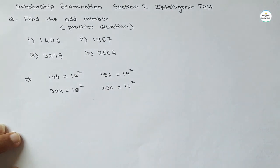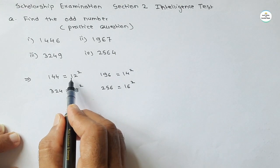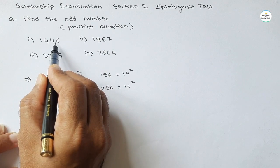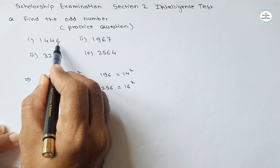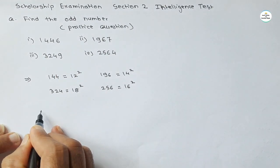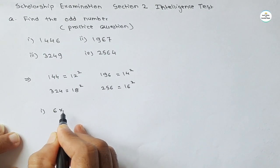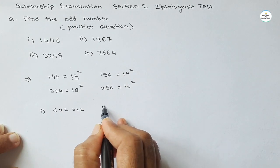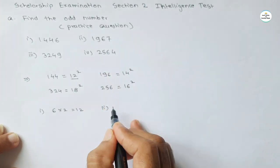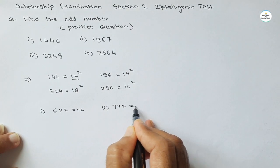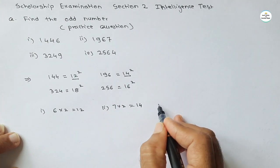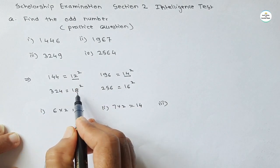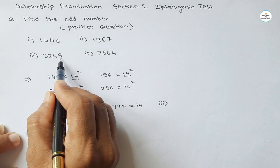So if we look at the first number 144: the last digit is 6, and if we multiply 6 by 2 we get 12, which is the square root. For the second number, the last digit is 7, and 7 multiplied by 2 gives 14 — and 14 is the square root of 196. Similarly for 324, which is the square of 18: the last digit is 4 — wait, it is 9 — and 9 multiplied by 2 gives 18.